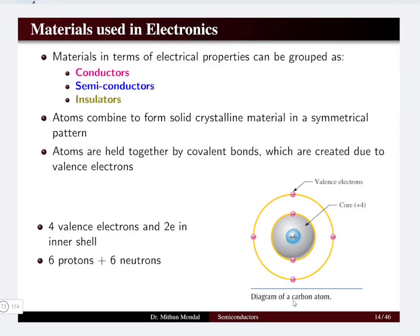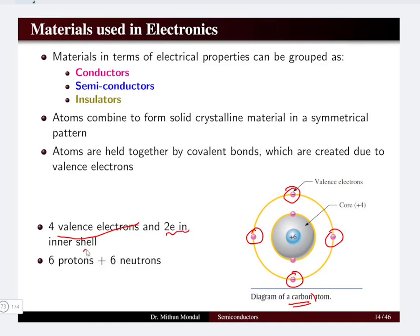Let us take an example of the carbon atom. In the carbon atom there are 1, 2, 3 and 4 valence electrons, so total 4 valence electrons are present. Only 2 electrons are present in the inner shell, and in the core we have 6 protons plus 6 neutrons. The nucleus is basically electrically neutral, and the plus 6 represents the number of protons present in the atom.